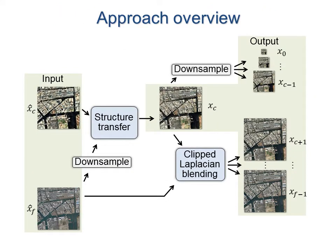We address these problems using two new techniques. Structure transfer combines the detail of the fine image with the color appearance of the coarse image to prevent ghosting. Given the now structurally compatible images, clip-laplacian blending interpolates them without blur.